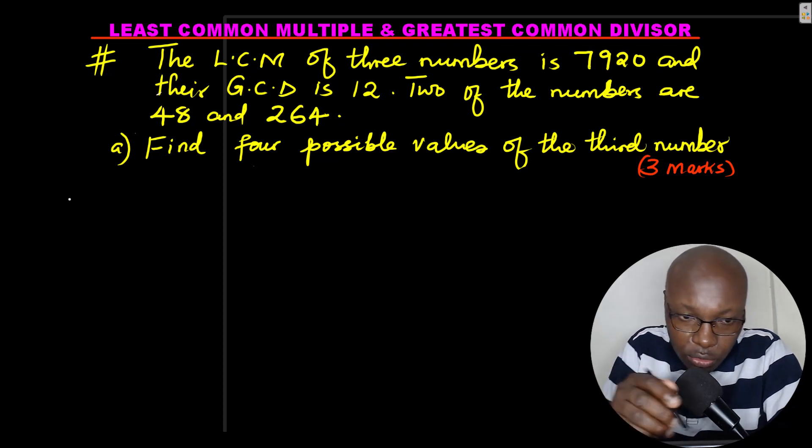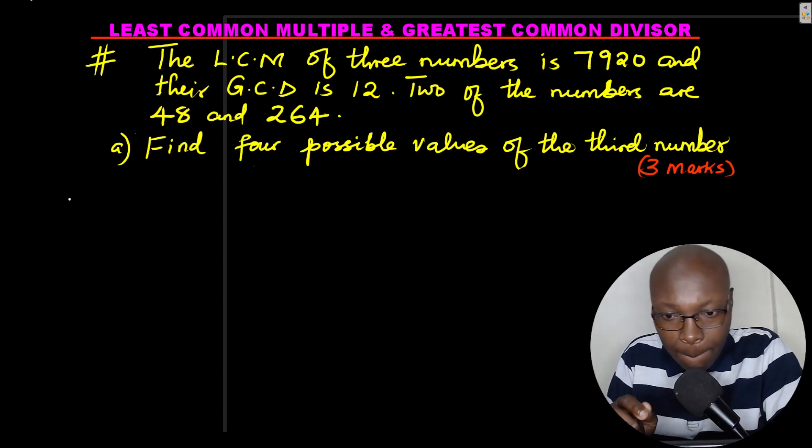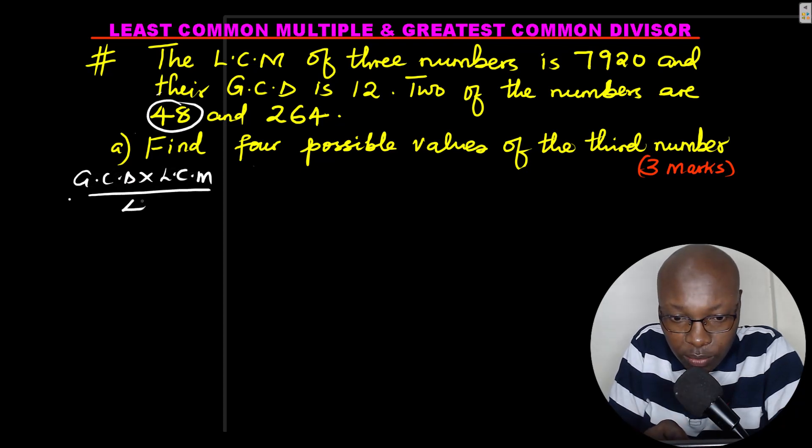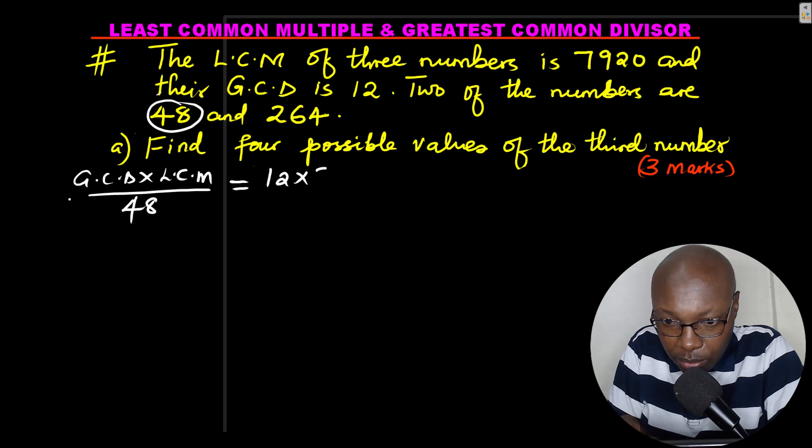This is how you get the first possible value of the third number: by simply getting the GCD times the LCM, then you divide by one of the numbers given, in this case it's 48. So get the GCD, which is 12, LCM is 7920, divided by 48.